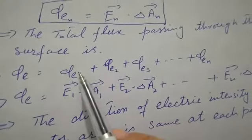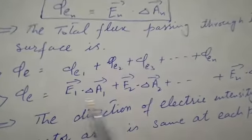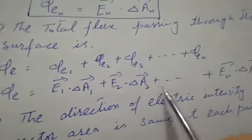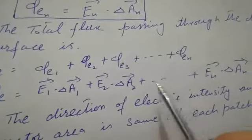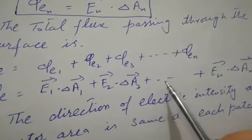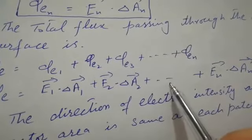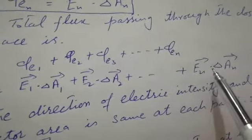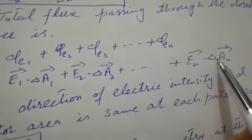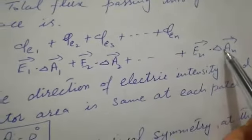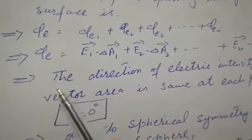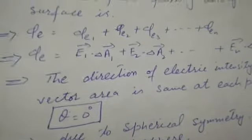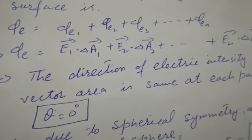We will put the total value: E1·ΔA1 + E2·ΔA2 + E3·ΔA3 + ... + En·ΔAn. Now, we have to look at the dot product. The dot product means cos θ, so each term is E·ΔA·cos θ.